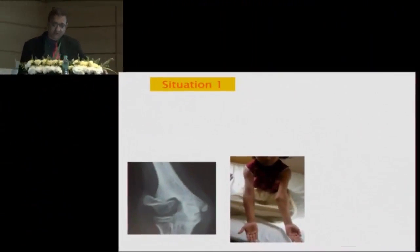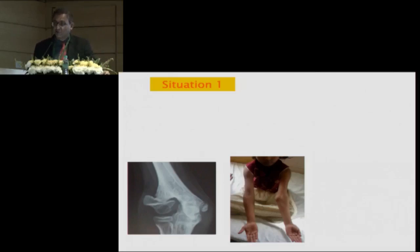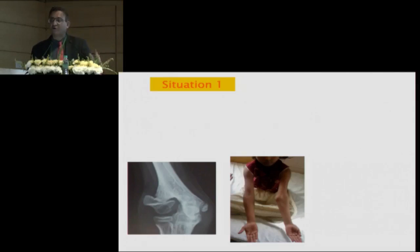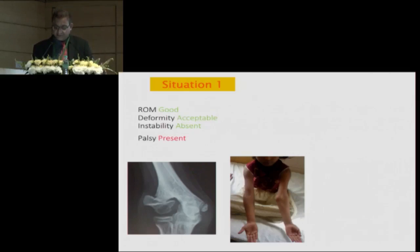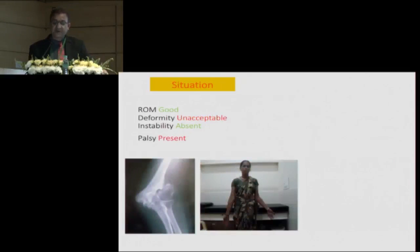There are two types of tardy ulnar nerve palsy. The first comes before the deformity begins. As Hitesh mentioned, at one year non-union you can have tardy ulnar nerve palsy — this is related to either entrapment of the nerve with tissue, or instability and rubbing of the nerve. Tardy ulnar palsy without deformity can be simply treated by anterior transposition.